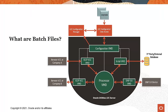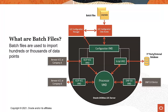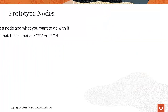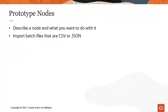At the top of the conceptual map, there are batch files. Batch files are used to import hundreds or thousands of data points. We understand you may not want to point and click all day, so that's why we created prototype nodes. With prototype nodes, you can describe a certain type of node and what you would like to do with it, then import batch files, which can be CSV or JSON files. These files have headers that are prototype points and content that can be hundreds or thousands of points. We'll go over this in a future video, but this gives you an idea of the capabilities of LEC Configuration Manager.